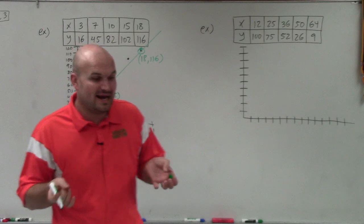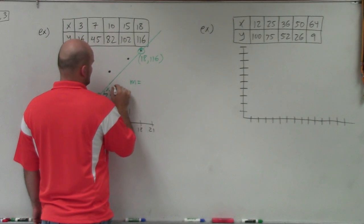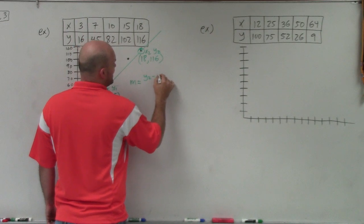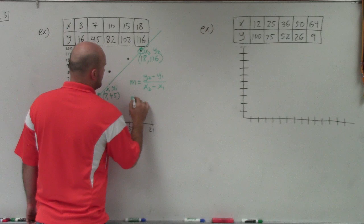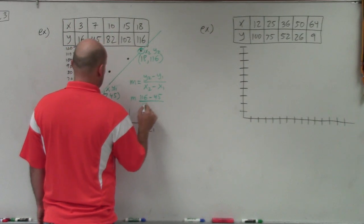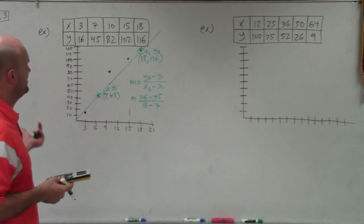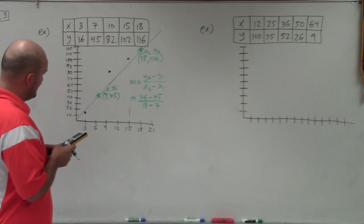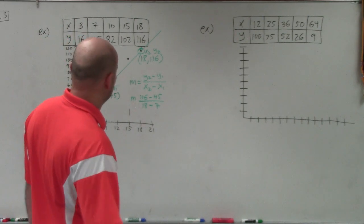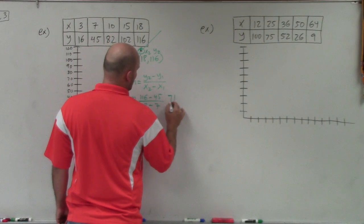So remember, we can create a line from given two points. Basically, the main important thing we want to do is determine the slope. So I'll say this is, I'll call this one x1, this one y1. I'll call this x2, and this one y2. So remember, the slope formula is y2 minus y1 over x2 minus x1. So when creating the slope, I'll do 116 minus 45 divided by 18 minus 7. It's kind of early in the morning. That'd be 71. So therefore, I have 71 and 18 minus 7 is going to be 11. So I have 71 over 11.